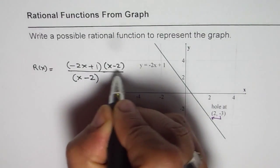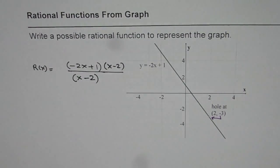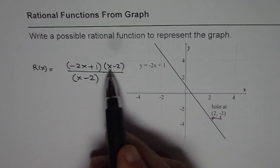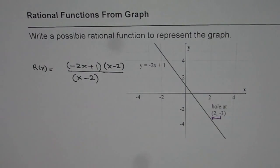So we have a common factor, x minus 2. Do you get the idea? So that becomes a rational function which will represent this line.